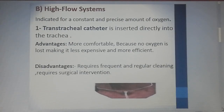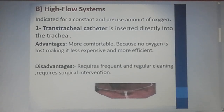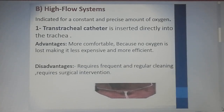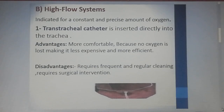The second type is high-flow systems, which are indicated for a constant and precise amount of oxygen. The trans-tracheal catheter is inserted directly into the trachea. Its advantages are greater comfort and efficiency, since no oxygen is lost, making it less expensive. The disadvantage is that it requires frequent and regular cleaning and surgical intervention.